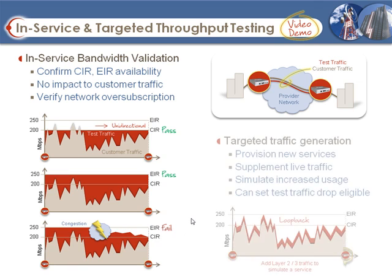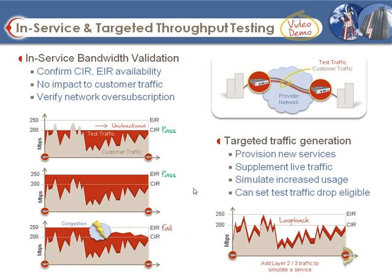We'll also demonstrate regular traffic generation tests — a very targeted traffic generation where you create a traffic flow to add an incremental layer on top of a customer's traffic. This would typically be used to provision a new service, for example to see if a voice-over-IP service or a new managed service could be overlaid on a customer's existing link without altering link performance, or to see what would happen with network over-subscription if the customer began using 20% more bandwidth.